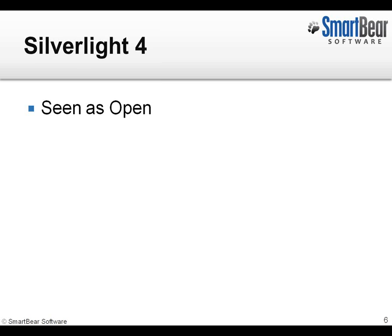Let's start out with Silverlight 4. Silverlight 4 applications are seen as open, meaning that they can be inspected down at a very detailed object level. You'll be able to recognize the controls inside of a Silverlight 4 application just as you would with a .NET application or a Java application. But in order for that to happen, we have a special TCAG patcher utility that must be run.